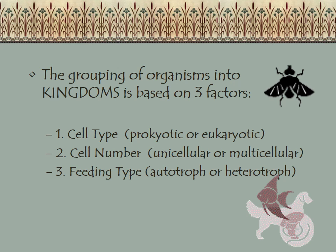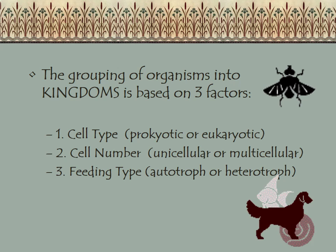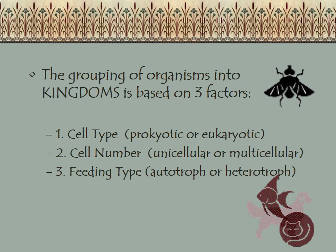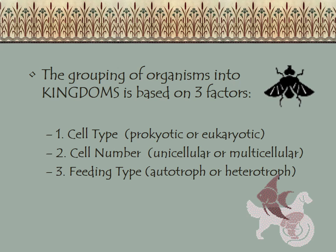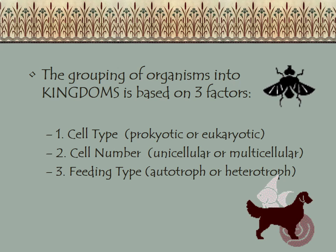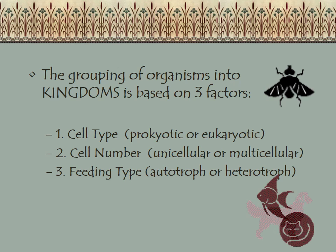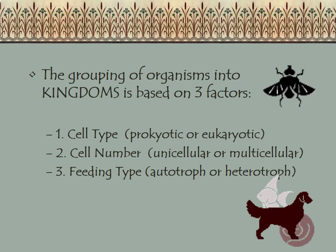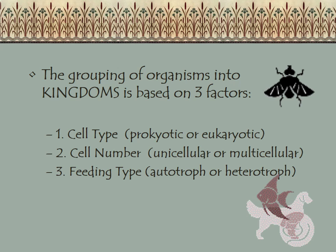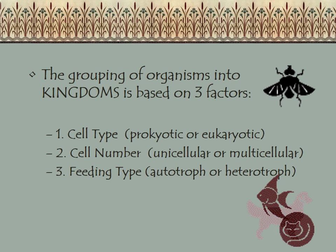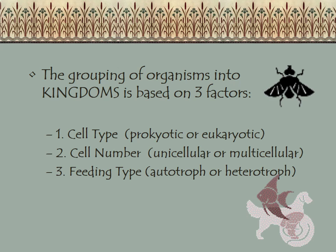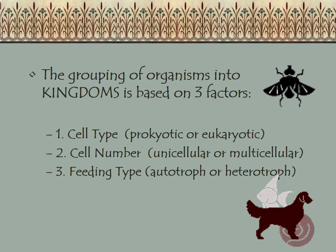Now that you have the three domains of life, those three domains are broken up into six kingdoms of life. The grouping of the kingdoms is based on three main factors: first, cell type — is it a prokaryote or a eukaryote? Second, cell number — is it unicellular or multicellular? And third, feeding type — is it an autotroph or heterotroph?